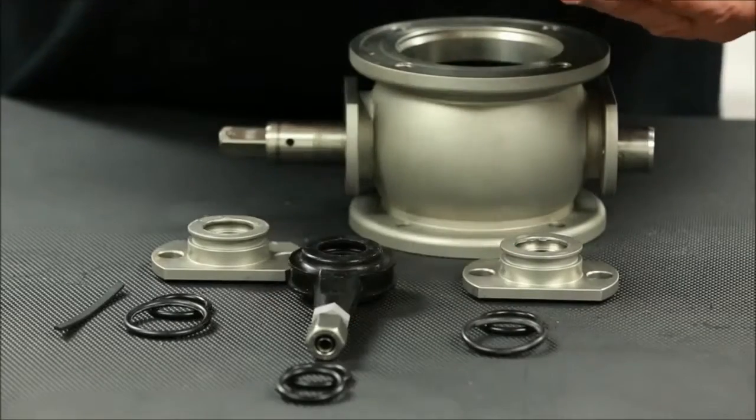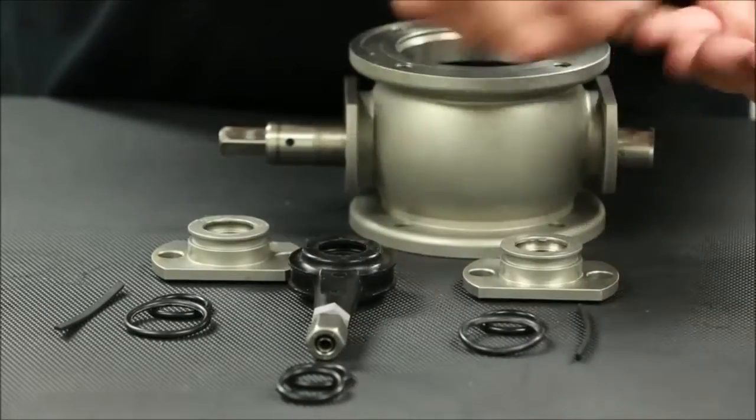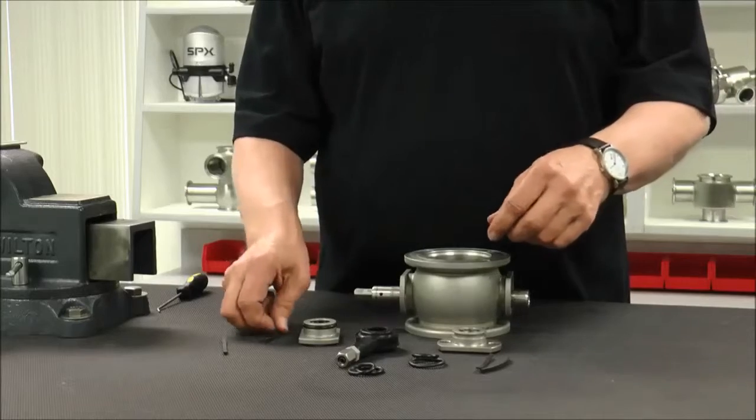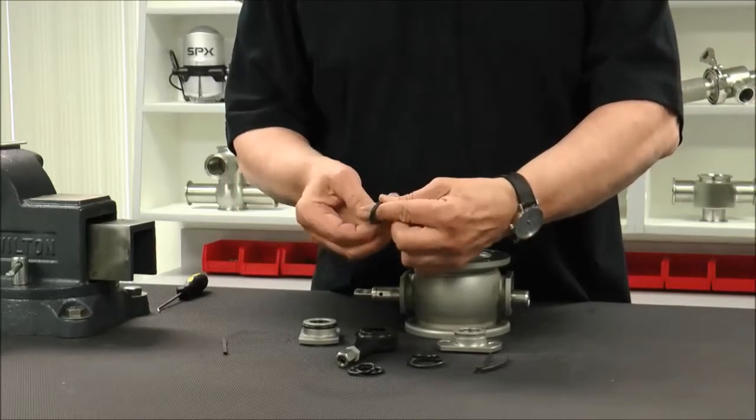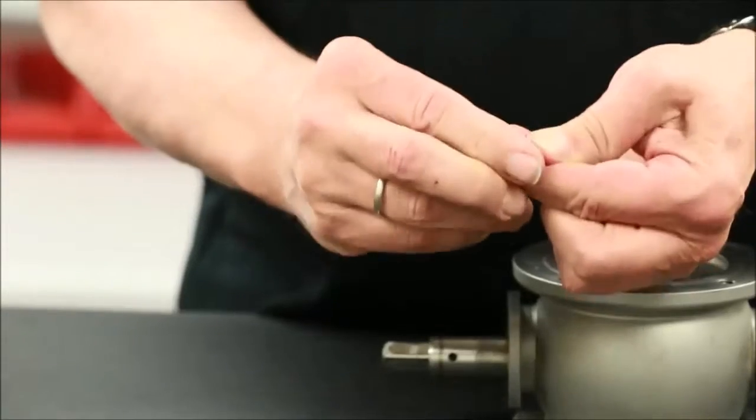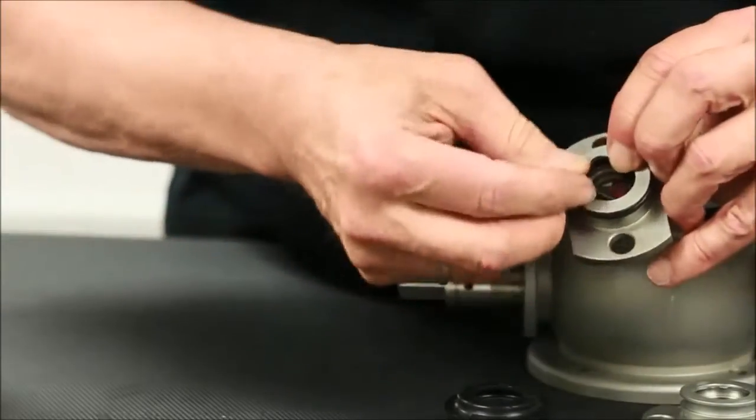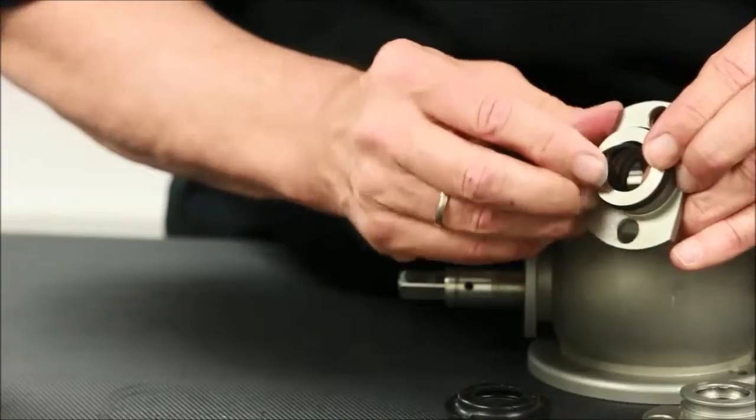Next, gather and arrange the required seal kit components for installation, which include new O-rings and guide rings. Install the O-rings and guides into their corresponding grooves. Be sure to first pre-shape the guides to allow for easier installation. Lubricant is not necessary on these components.